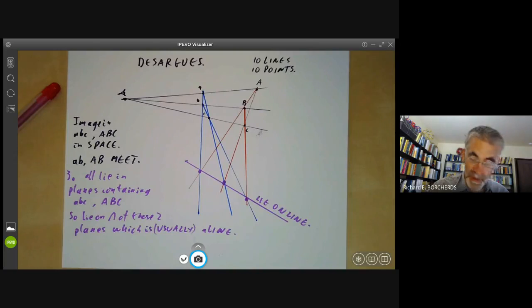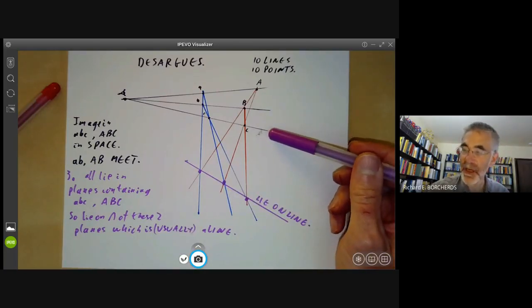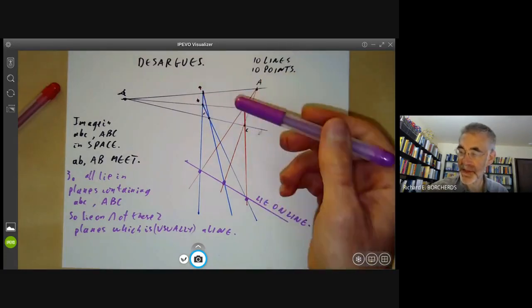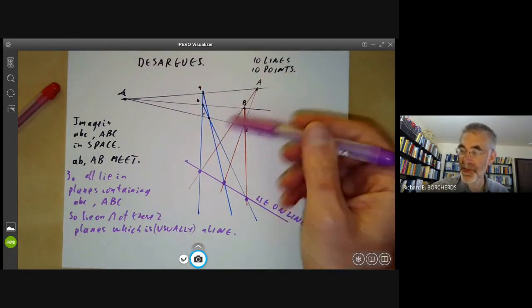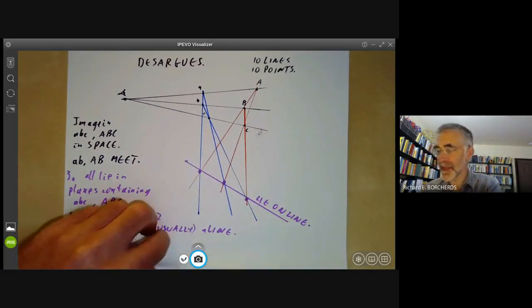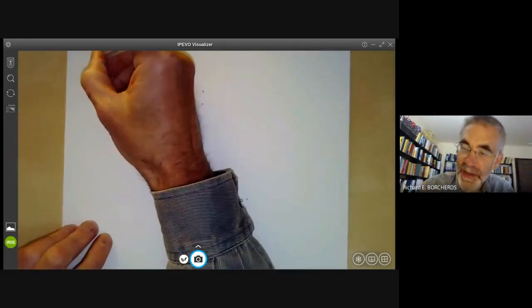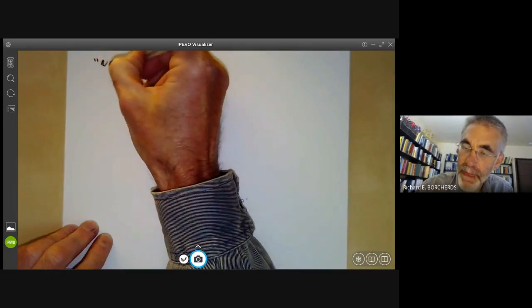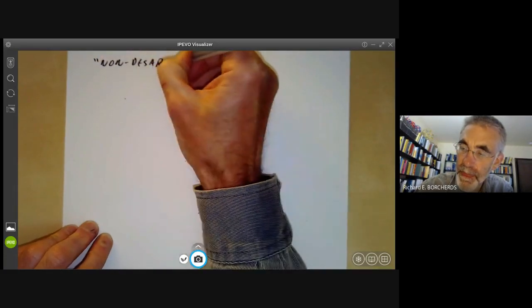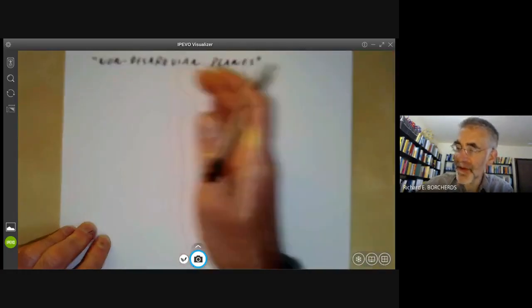So if you've got a projective space of some dimension, if it is dimension at least three, it automatically satisfies Desargues' theorem for the two-dimensional planes in it, because you can push everything up to three dimensions. If you've got a two-dimensional projective plane, it doesn't necessarily satisfy Desargues' theorem. So there are some examples called non-Desarguesian planes which don't actually satisfy Desargues' theorem.